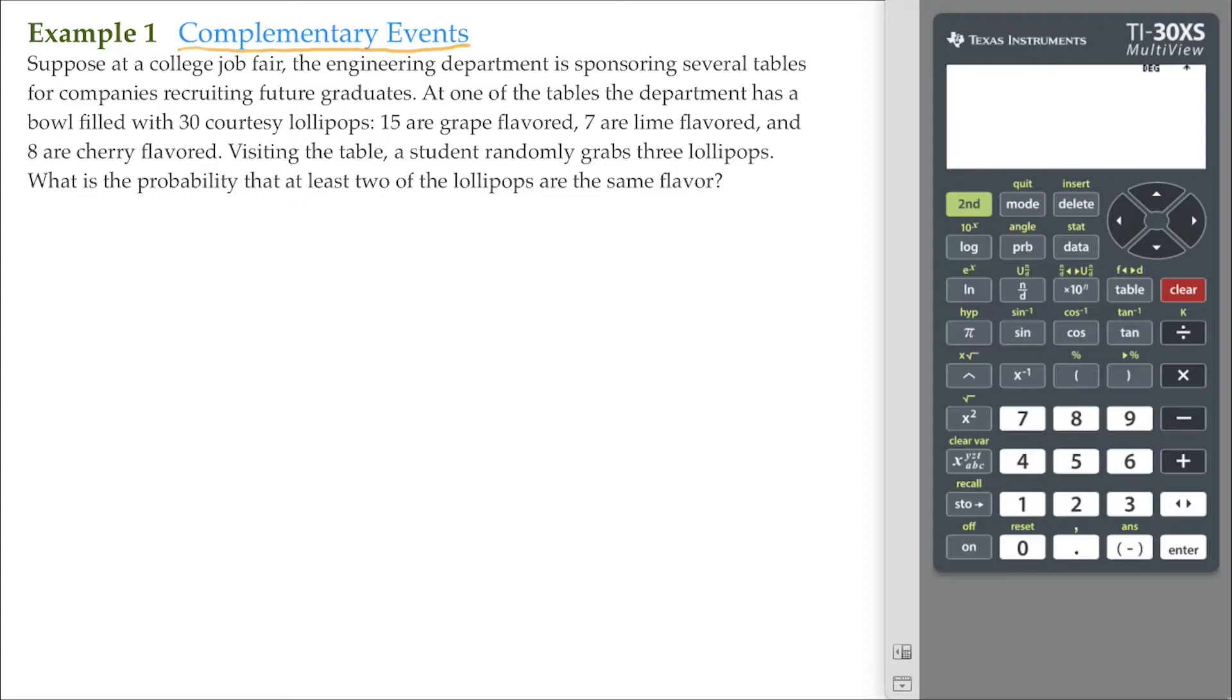The probability of an event occurring we symbolize as P of E. Its complement can be symbolized with P of E to the C power. Now, there are other ways that the complement can be symbolized, but we'll stick with this one.